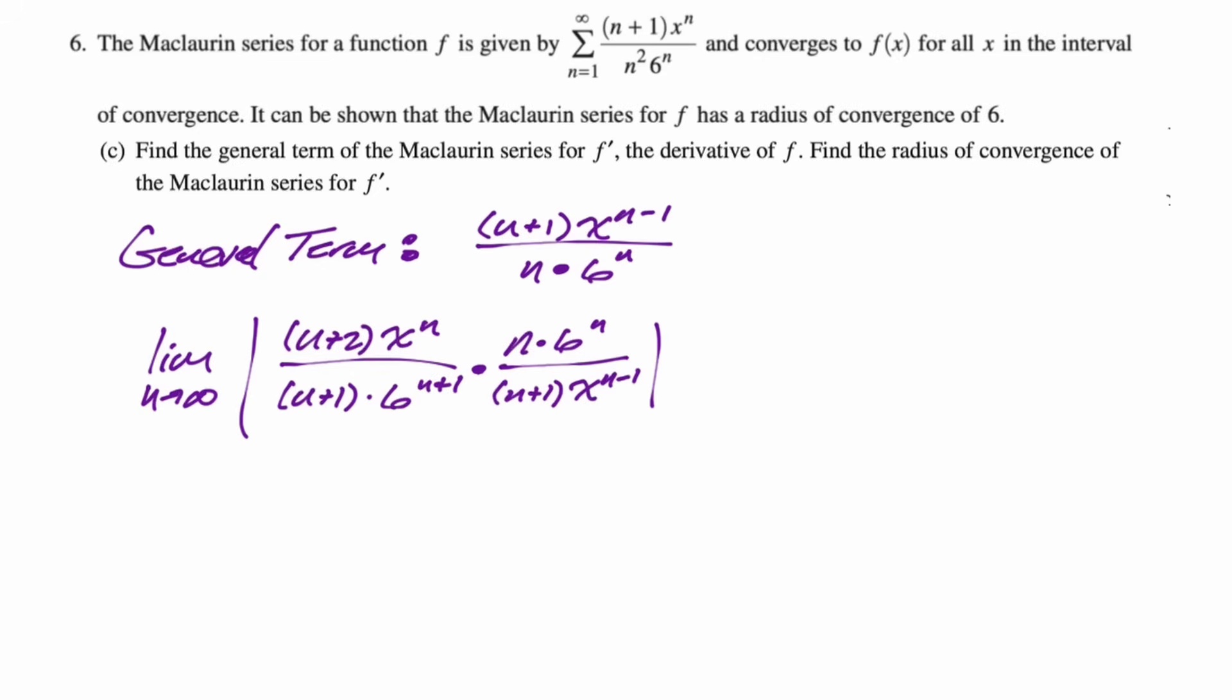If you look at it in the numerator, you have n+2 and n. In the denominator, you have n+1 and n+1. So that's like n^2 over n^2. That's just 1 as you go to infinity. You don't have to worry about it. You have 6^n over 6^(n+1). The 6^n's cancel, and you just have a 1/6 or a 6 in the denominator. And then x^n divided by x^(n-1). The x^n's cancel. You have 1 over x^(-1), which becomes x^1 in the numerator. So we end up with just the absolute value of x/6.